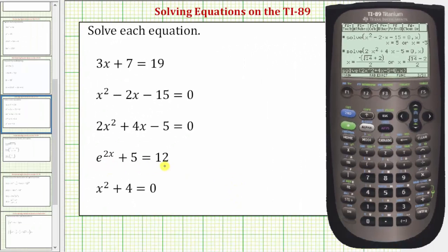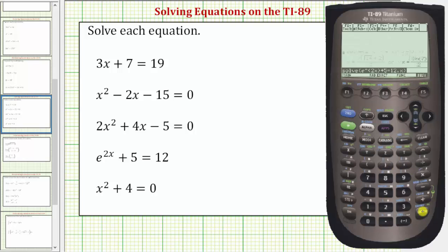Next we have an exponential equation. So we'll press F2, enter, and we have e raised to the power of 2x. So we'll enter diamond x, which brings up e raised to the power of 2x, close parenthesis, plus 5 equals 12. Again we're solving for x, so we enter comma x, close parenthesis, and enter.